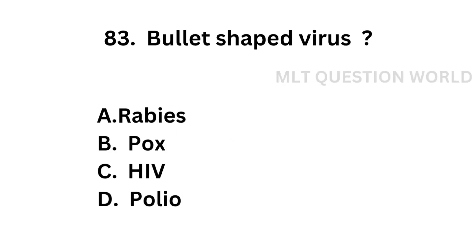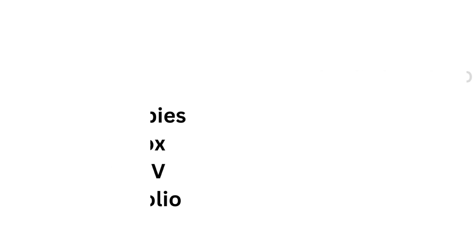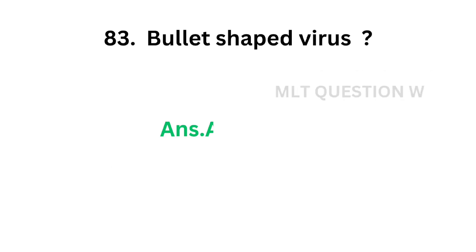Question number 83: Bullet-shape virus — Option A: Rabies, Option B: Pox, Option C: HIV, Option D: Polio. The correct answer is Option A, Rabies. Rabies is a bullet-shaped virus.